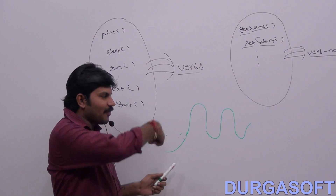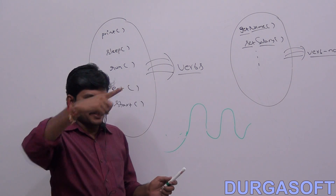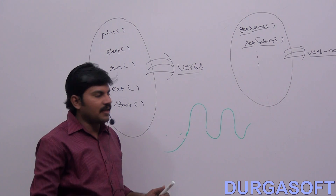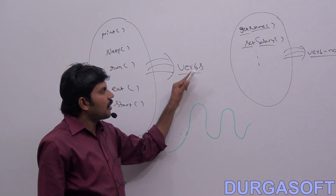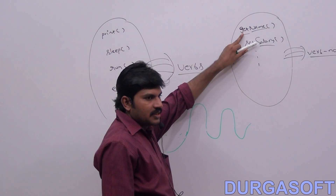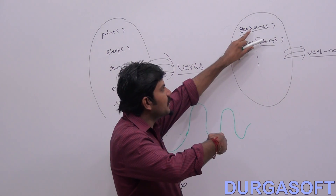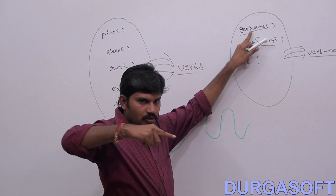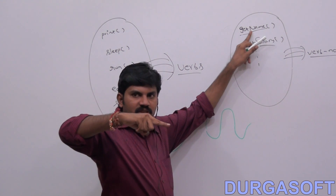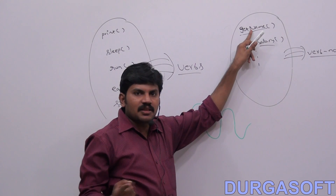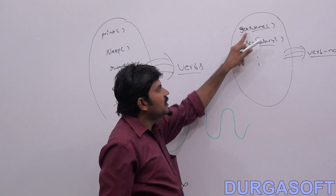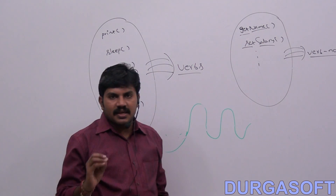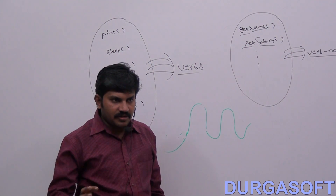This type of convention — where it starts with a lowercase character and every inner word starts with an uppercase character — is referred to as the camelCase convention.